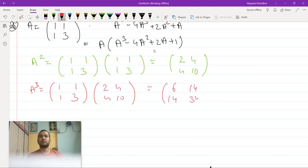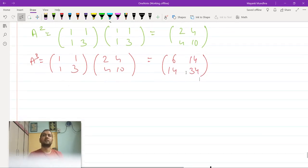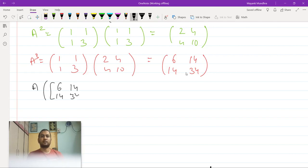Okay now finally you have the thing that you are looking for. So A times of A cube so that's [[6,14],[14,34]] minus 4 times of A square so that's [[2,4],[4,10]] plus twice of A so [[1,1],[1,3]].